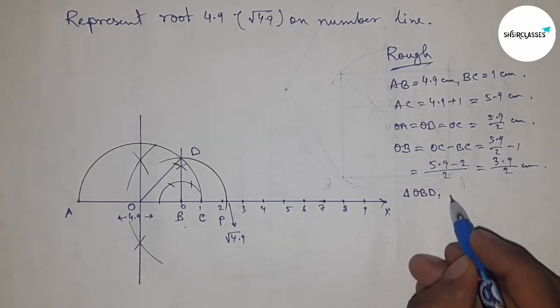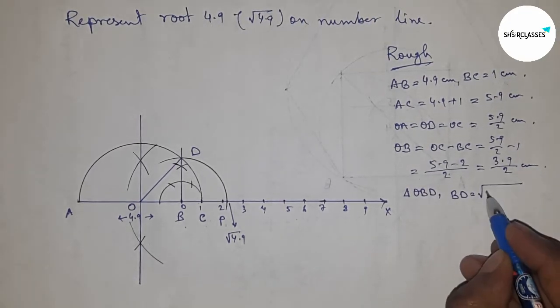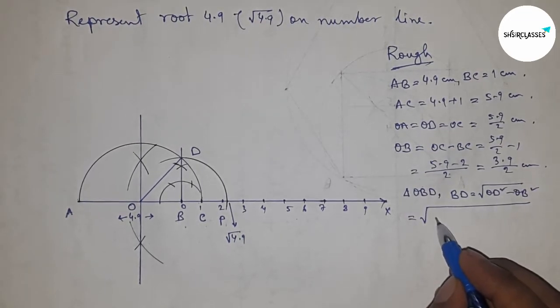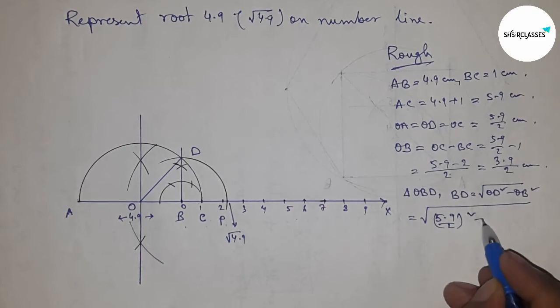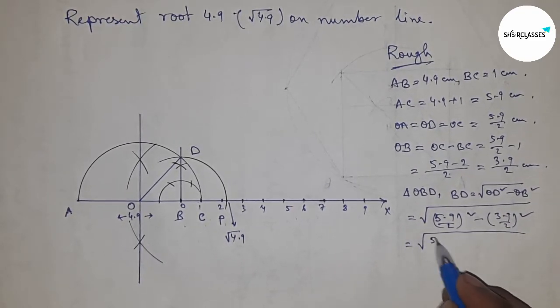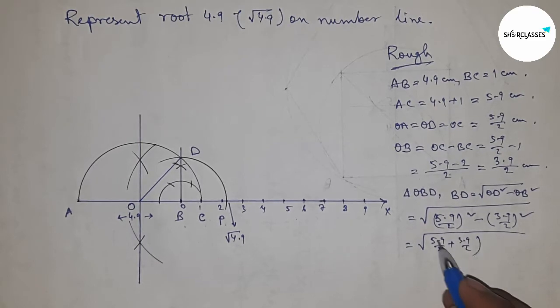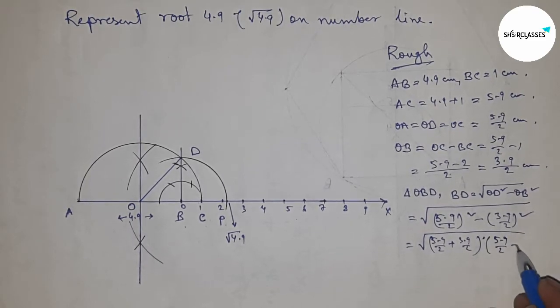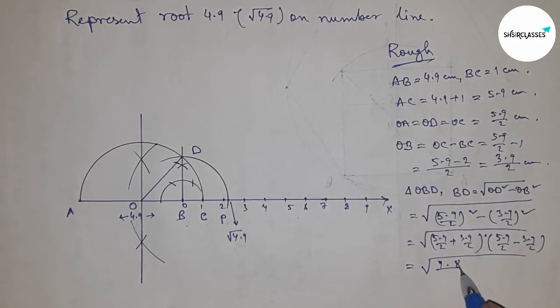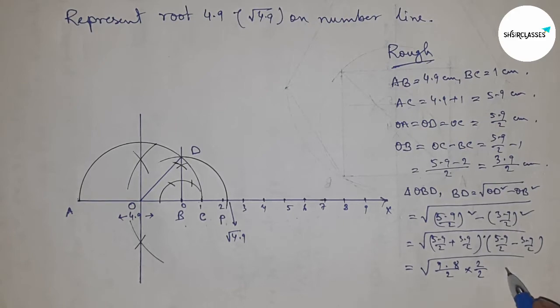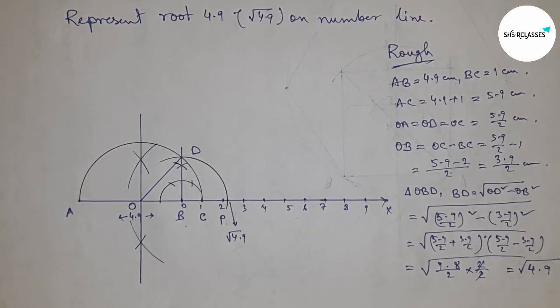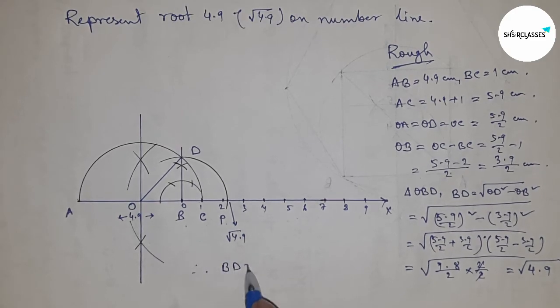Now in right angle triangle OBD, we can write BD equals square root of OD squared minus OB squared. Putting the value of OD and OB, and applying the formula a squared minus b squared equals (a plus b)(a minus b). So this is 9.8 by 2 times 2 by 2, so this is root 4.9 centimeters.